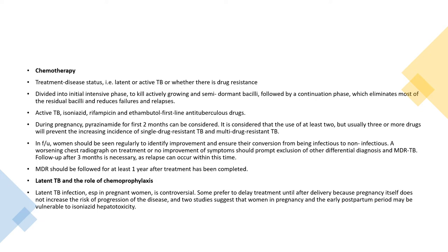Active TB is treated with isoniazid, rifampicin, and ethambutol as first-line antituberculosis drugs. During pregnancy, pyrazinamide for the first two months can be considered. Use of at least two, but usually three or more drugs, will prevent the increasing incidence of single drug-resistant and multi-drug-resistant TB. Women should be seen regularly to confirm improvement and ensure conversion from infectious to non-infectious status. A worsening chest radiograph on treatment or no symptom improvement should prompt exclusion of other differential diagnoses. Follow-up after three months is necessary as relapse can occur within this time.